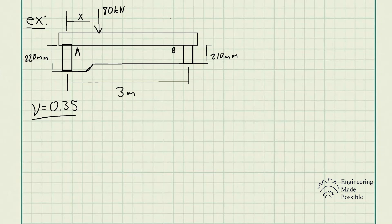For this problem statement, we have a rigid beam resting in a horizontal position on two 2014-T6 aluminum cylinders having the unloaded lengths shown. If each cylinder has a diameter of 30 millimeters, determine the placement X of the applied 80 kilonewton load so that the beam remains horizontal.